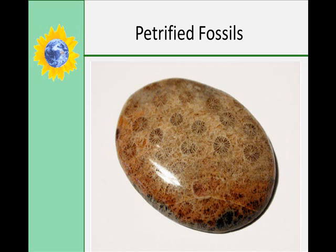Dinosaur footprints have been found in many locations. Even the fossilized excretions of animals, called coprolites, have helped scientists understand the eating habits of extinct animals. This, by the way, is not a coprolite — it's a petrified coral.